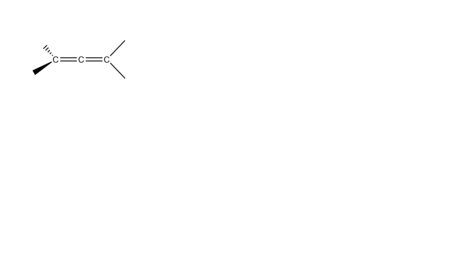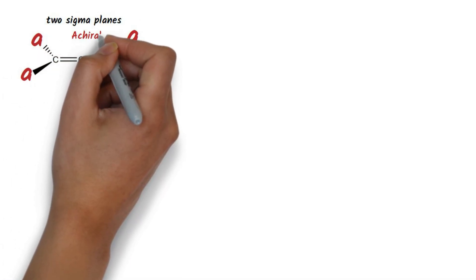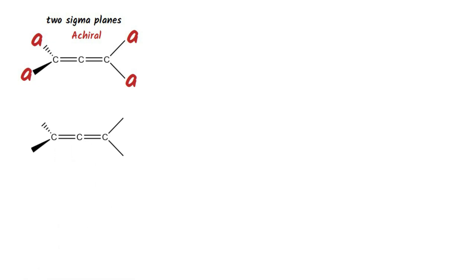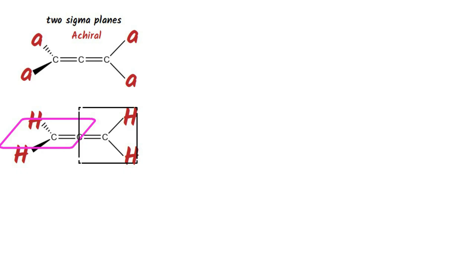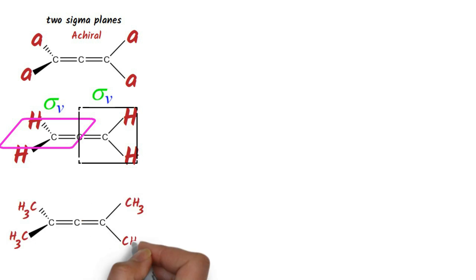Consider this allene with the same substituents on both end carbons — it will have two sigma planes and will be achiral. As an example, consider an allene with only hydrogen on both end carbons. It will have two planes, horizontal and vertical. The vertical plane becomes a sigma plane for the horizontal one, and the horizontal plane becomes a sigma plane for the vertical one. Another example of the same type is an allene with only methyl groups as substituents on both end carbons. Thus both these allenes will be achiral.